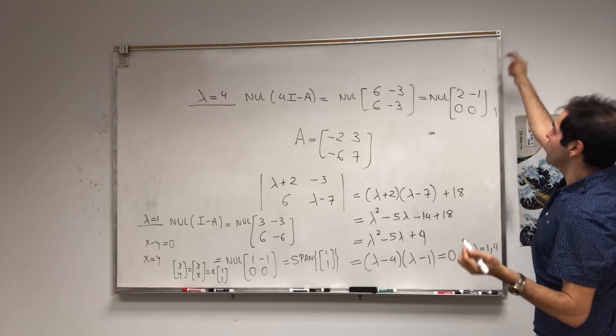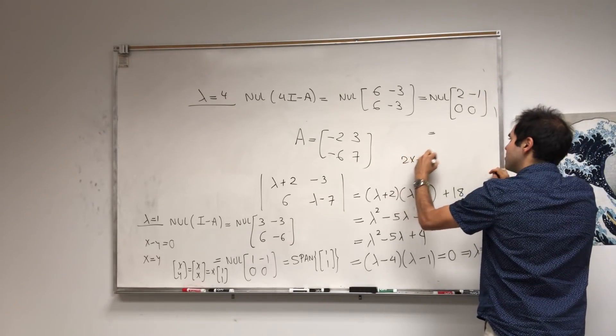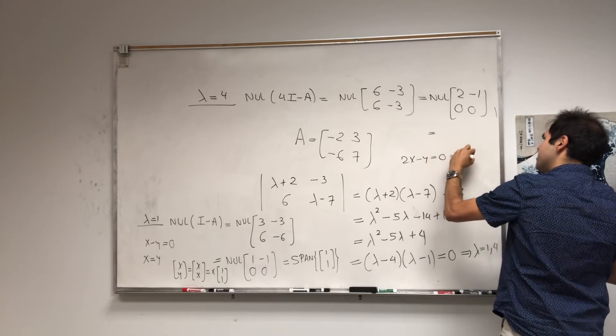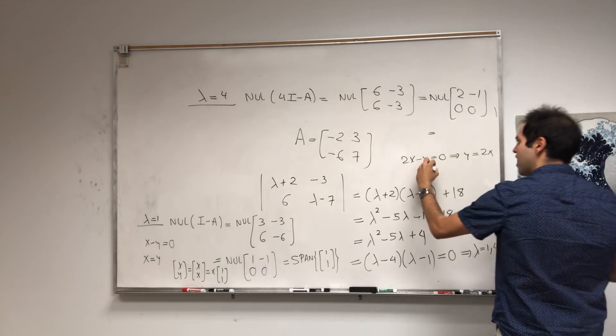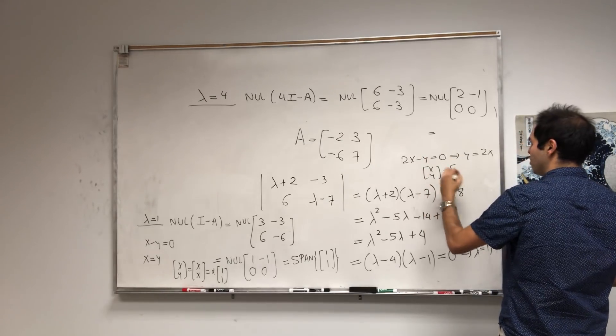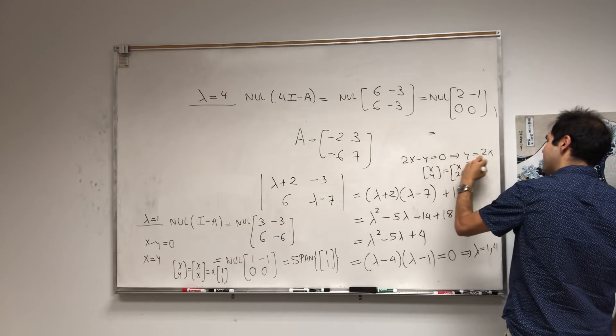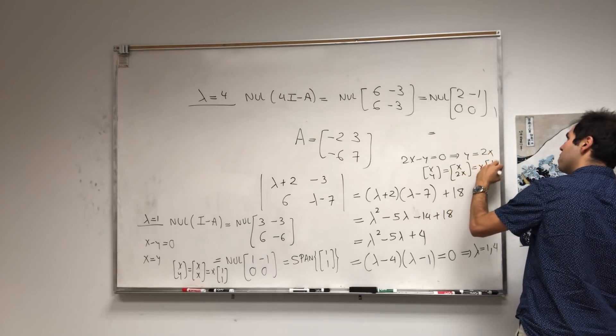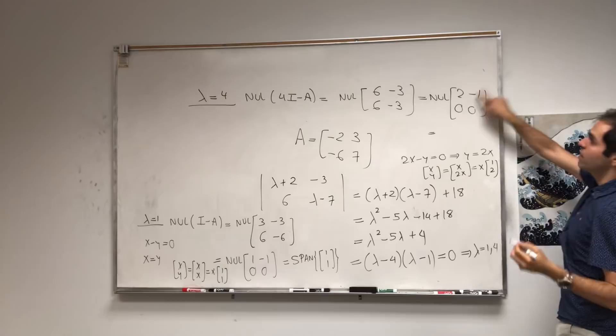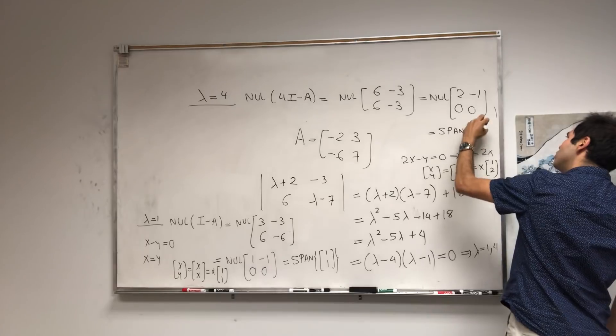If you solve 2x - y = 0, then y = 2x. Your vector (x, y) becomes (x, 2x), which is x times (1, 2). And you can check that (1, 2) satisfies this equals 0. So this is the span of (1, 2).